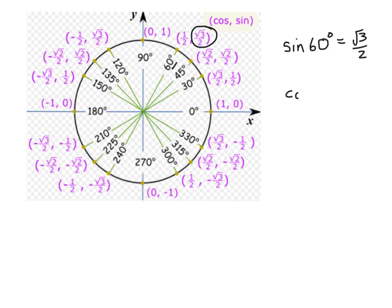If we want to find the cos of 225 degrees, we go to 225 and we find the x value at 225, negative root 2 over 2. So what we've done here is defined that the sine is the y value and the cos is the x value.